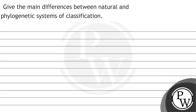Hello, let's read the question. The question says: give the main differences between natural and phylogenetic system of classification. For this question, our key concept would be types of classification.